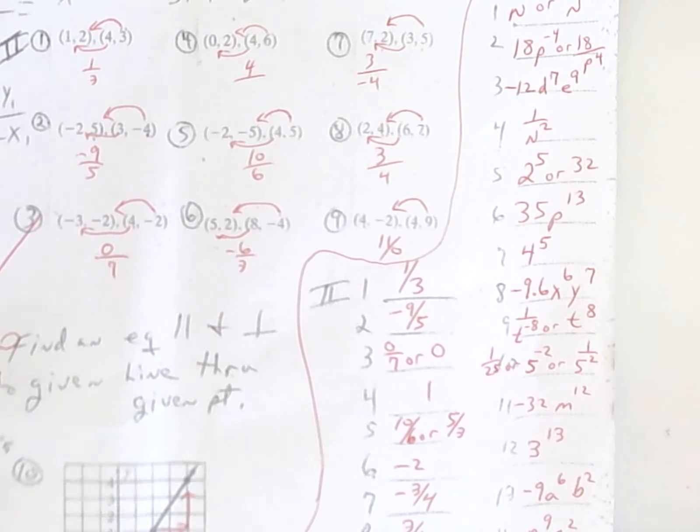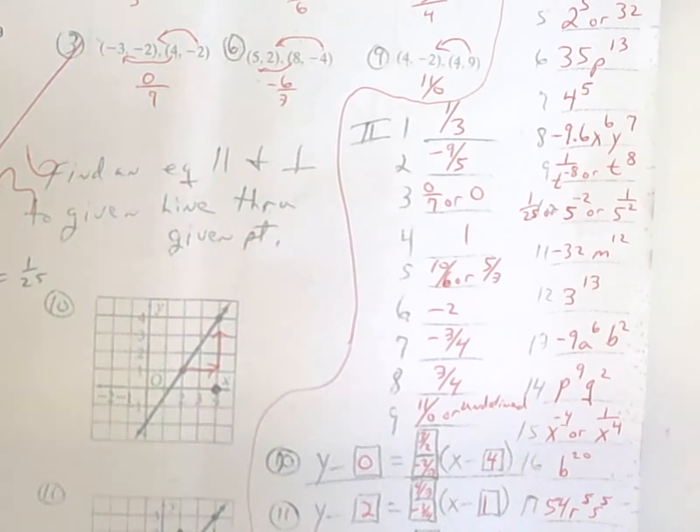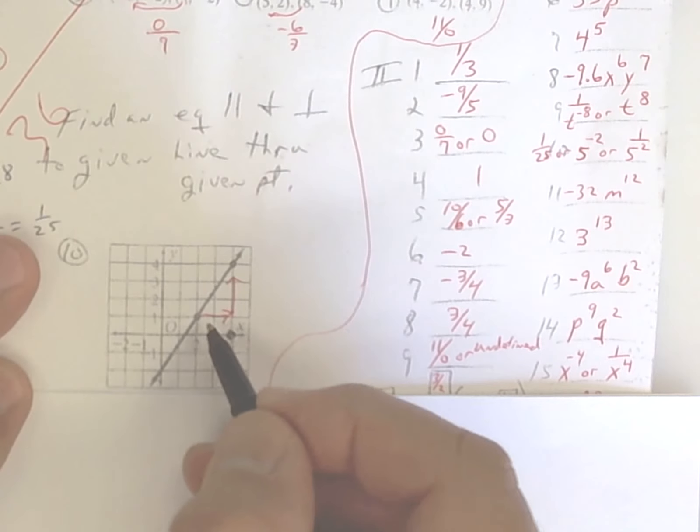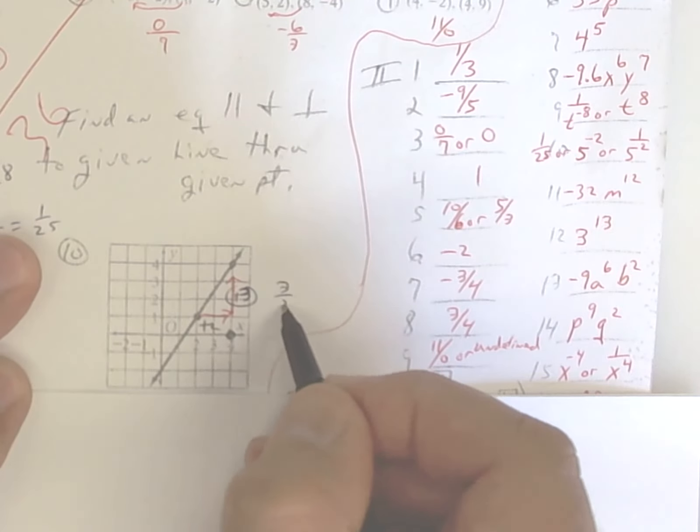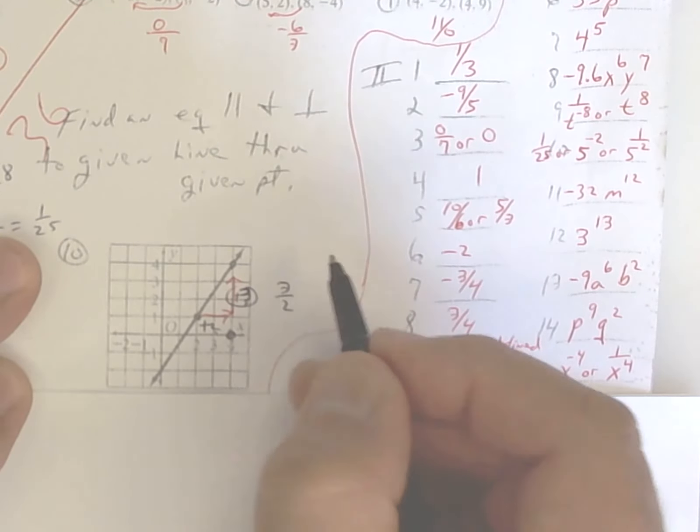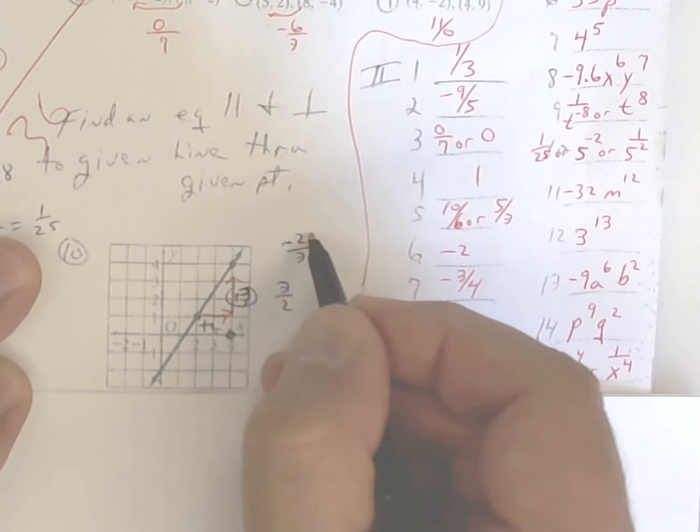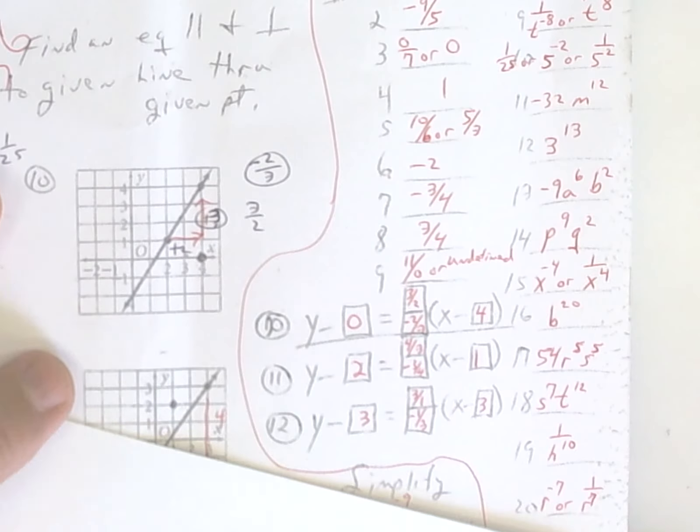10 and 11 down here. You've got to figure out your slope. So look here. From this point to that point, you've got to go to the right 2 and up 3. So it's rise over run. So it's 3 over 2. Rise over run. If you want perpendicular, you've got to flip it and change it. That will get you perpendicular.